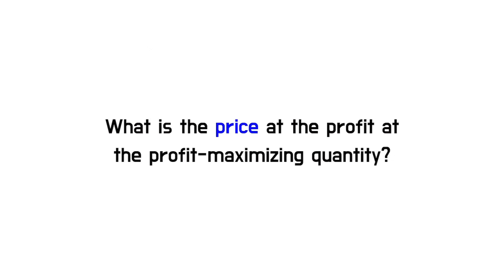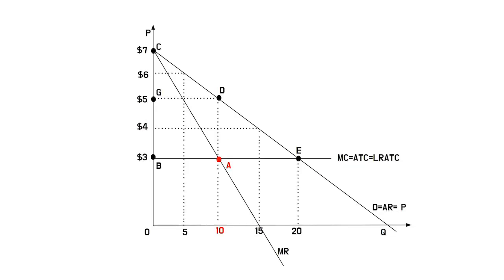Second, what is the price at the profit-maximizing quantity? The answer would be $5.